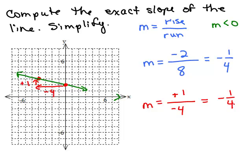It doesn't matter what two points you use. The slope of this line is going to be negative 1/4.